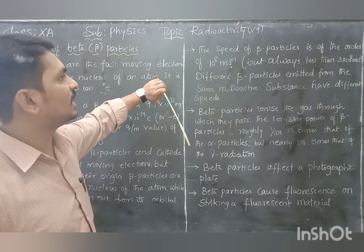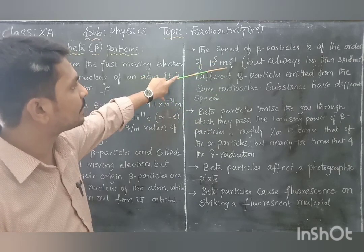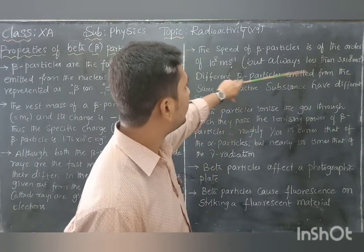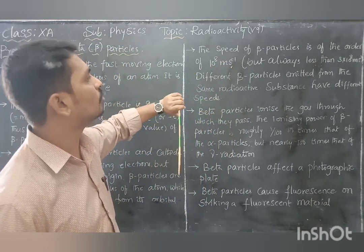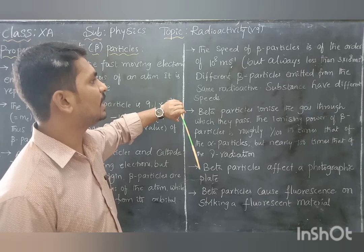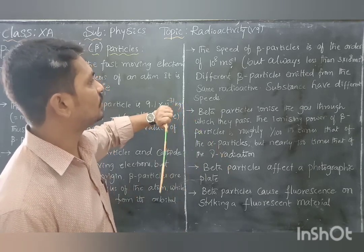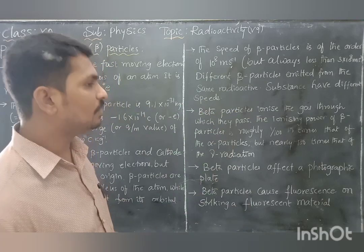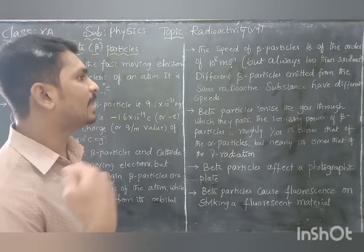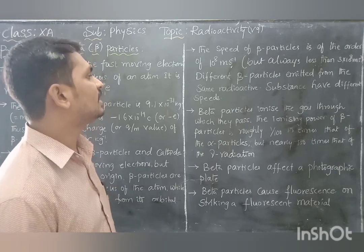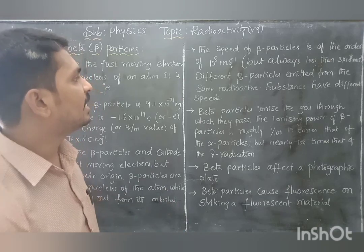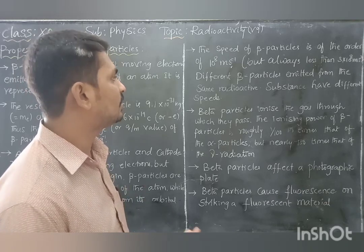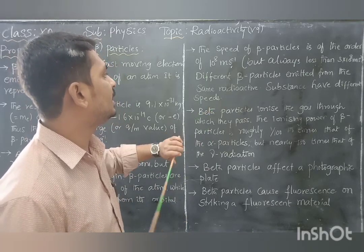The next property is the speed of beta particles, which is approximately in the order of 10⁸ meters per second, but always less than the speed of light. Different beta particles emitted from the same radioactive substance have different speeds — even from the same radioactive substance, the beta particle speed is different at different times.